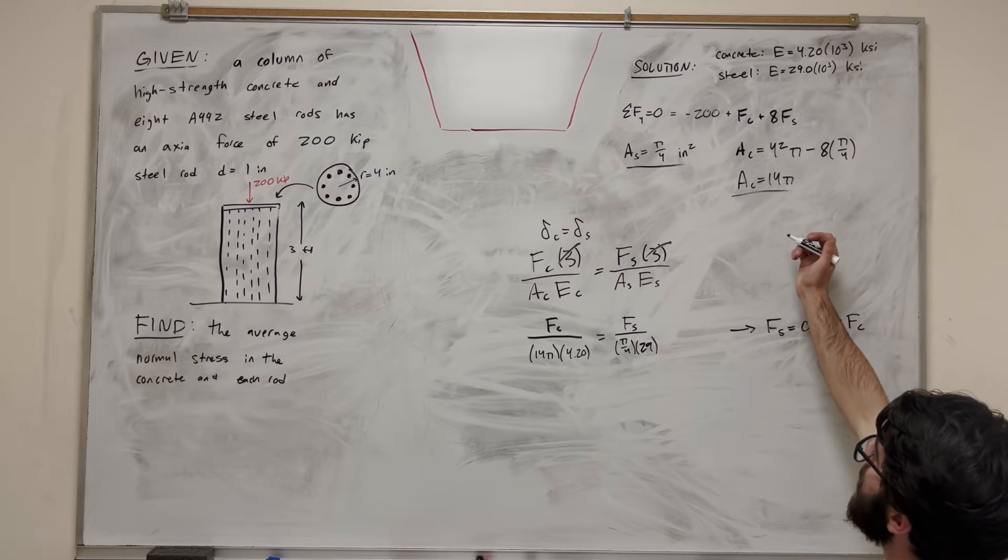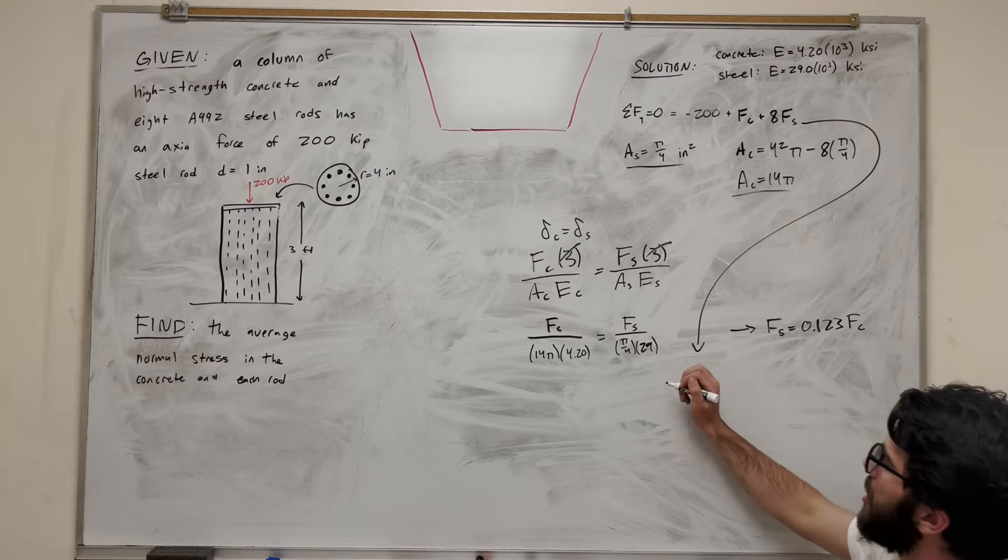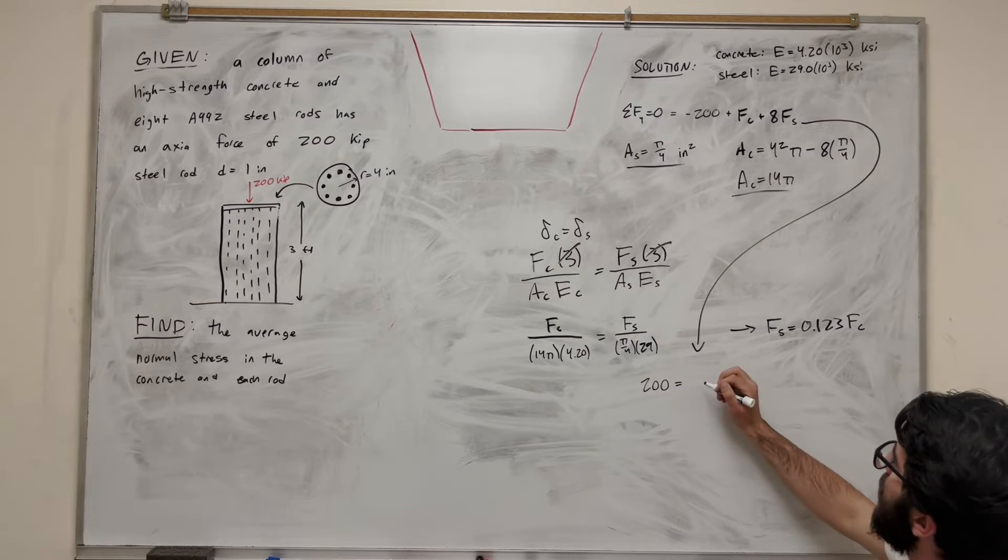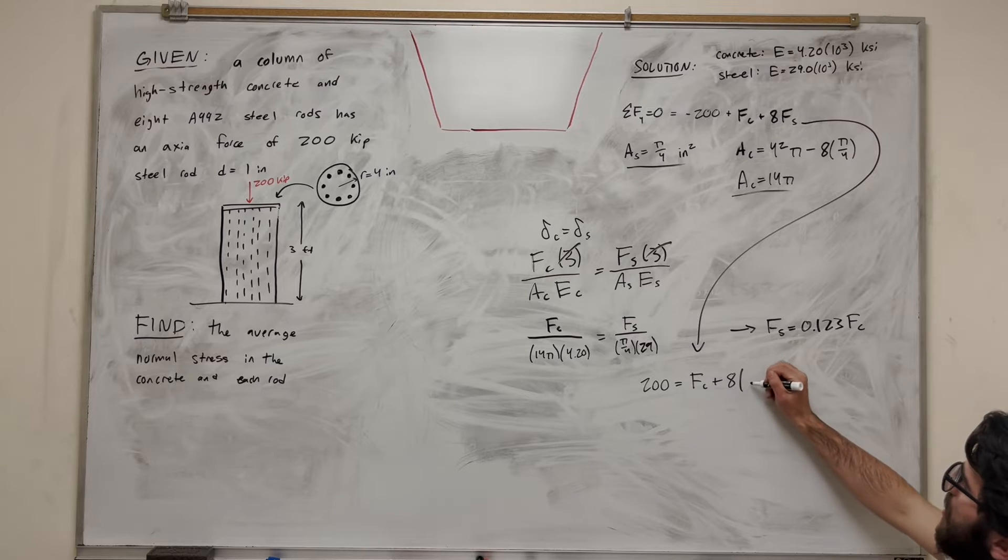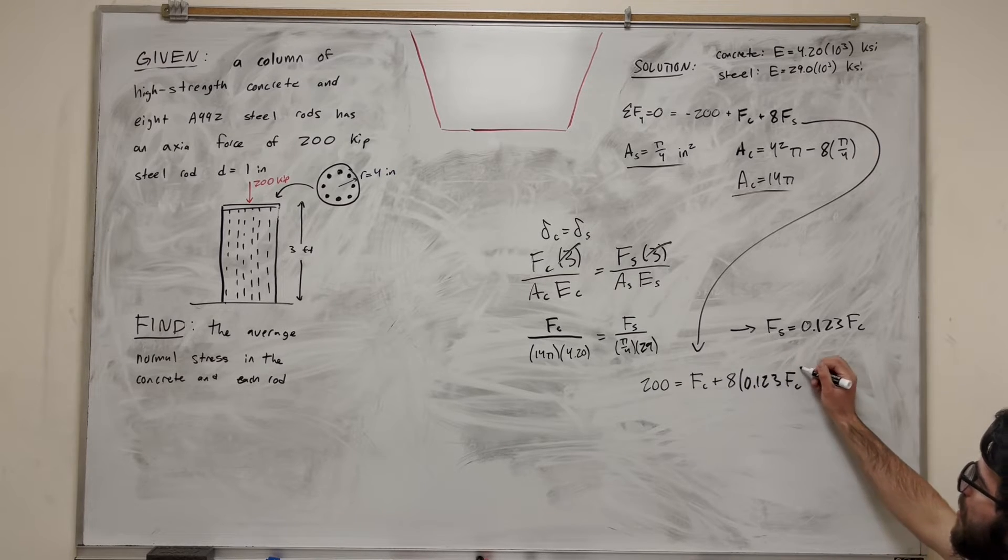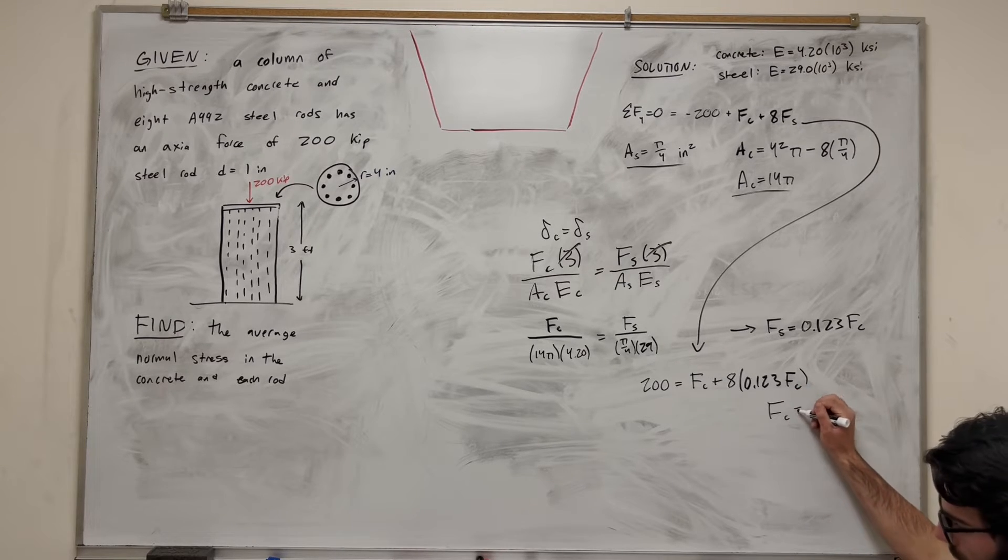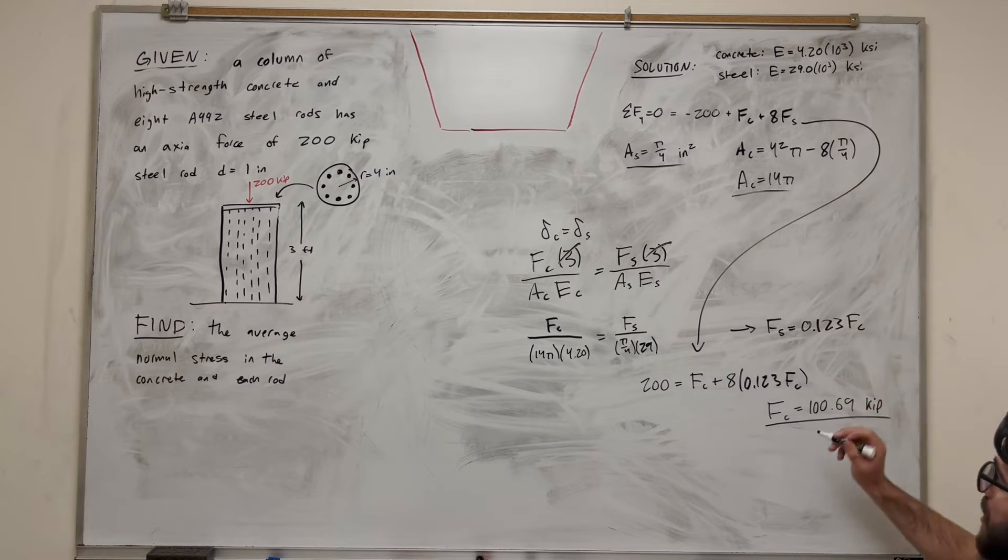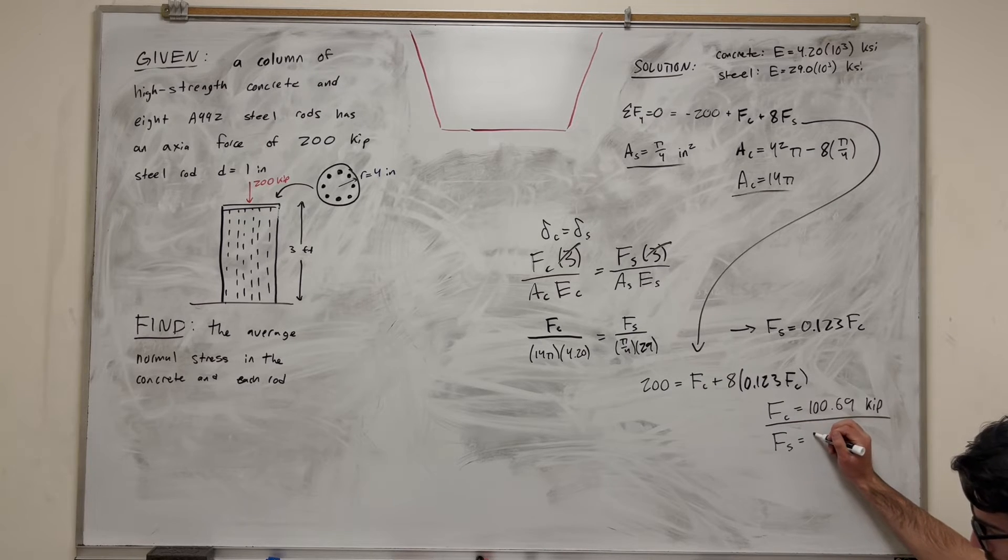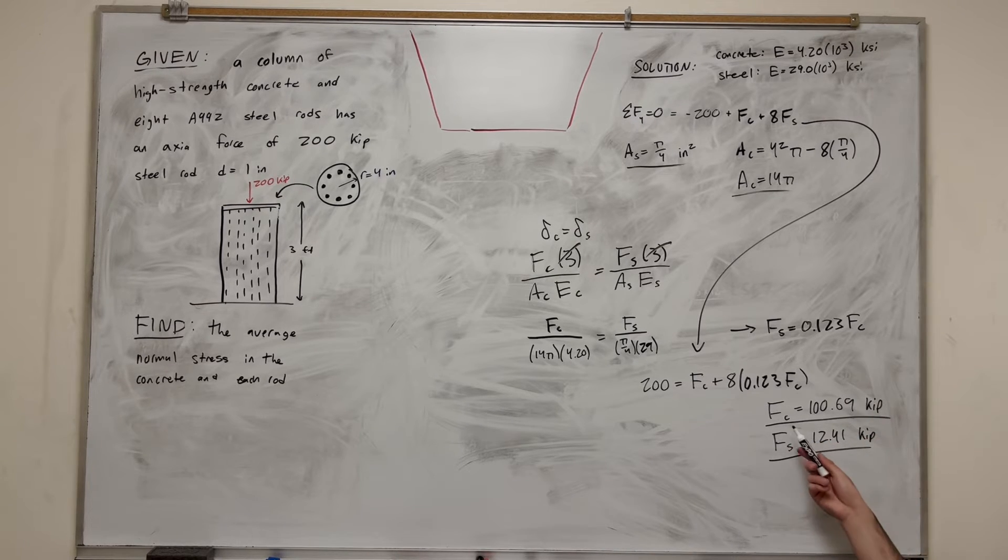So now what we're going to do is we're going to go back to that sum of the forces equation. Let's bring this down here. So let's move the 200 to the other side. So it's going to be 200 is equal to force of the concrete plus 8 times the force of the steel. But we know the force of the steel is 0.123 force of the concrete. So now we just have one equation and one unknown. Pretty simple. From here, we're just going to solve for force of concrete. This gives us that the force of the concrete is equal to 106.9 kip. Then if we do it for the steel, all we have to do is take this number and plug it back into this equation. It'll give us force of the steel is equal to 12.41 kip. So each steel rod has 12.41 kip on it, and then the concrete has 100 kip on it.